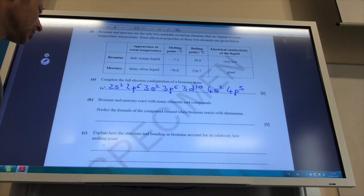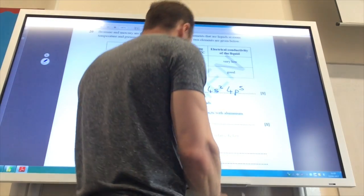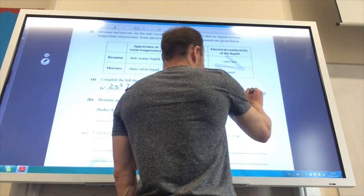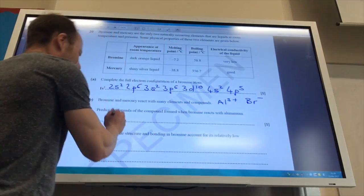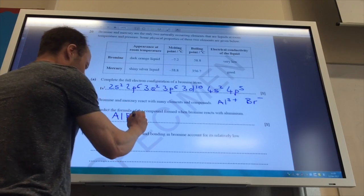Bromine and mercury have many elements. Predict the formula when bromine reacts with aluminium. So aluminium is of course in group 3 so it's going to form Al3+. Bromine is in group 7 so forms Br-, and therefore the formula is AlBr3.